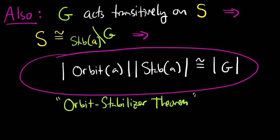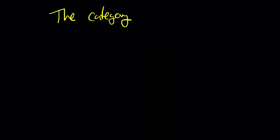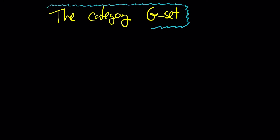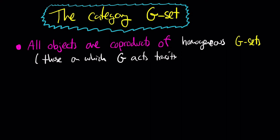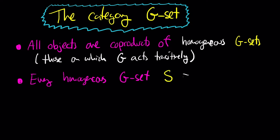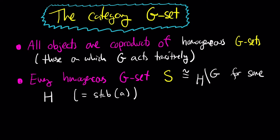So we're starting to get a really good picture of what the category of G-sets looks like. The first observation is that every G-set decomposes into the disjoint union of G-sets on which G acts transitively. In this category, disjoint unions are coproducts, and sets on which G acts transitively are sometimes called homogeneous G-sets. So all the objects of this category are coproducts of homogeneous G-sets. Each homogeneous G-set is isomorphic to one of the form G mod H for a subgroup H of G. That tells us what the objects are in this category; now we just need to look at the morphisms, which are equivariant set maps, and ask whether they have a nice description in terms of the group structure of G — and they do.